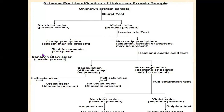To confirm that casein is present, you carry out the next test: the test for organic phosphate. When you do the test for organic phosphate, you will get canary yellow color — that is the confirmatory test for casein. So casein is present and confirmed. For a casein sample: biuret test gives violet color, isoelectric test gives curdy precipitate, and the organic phosphate test gives canary yellow color.